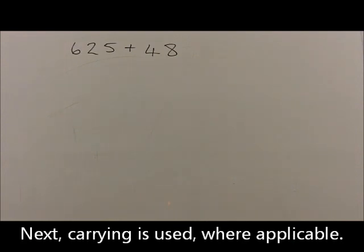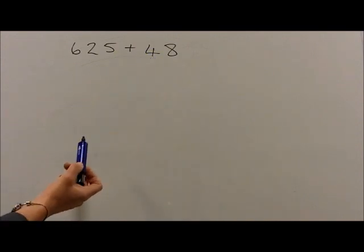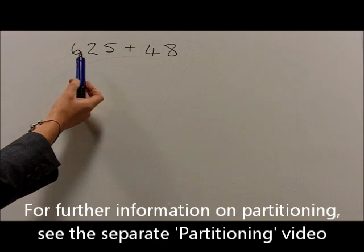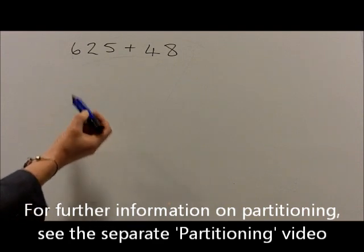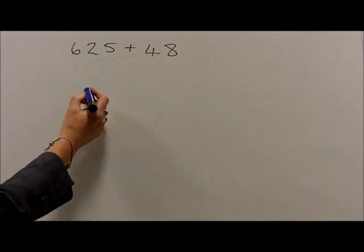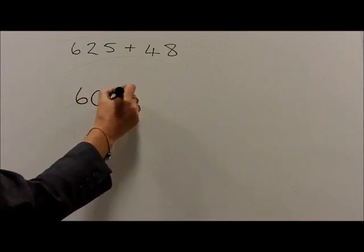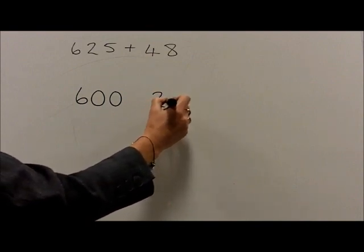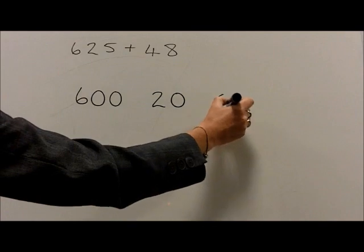For example, with 625 plus 48, they still partition the 625 into the respective 100s, 10s and units. So we have 6 100s, which are 600, plus 2 10s, which are 20, plus 5 units, which are 5.